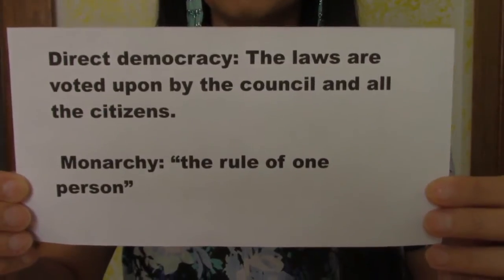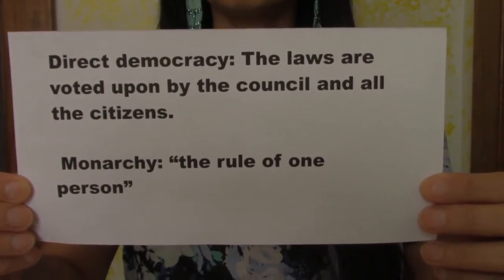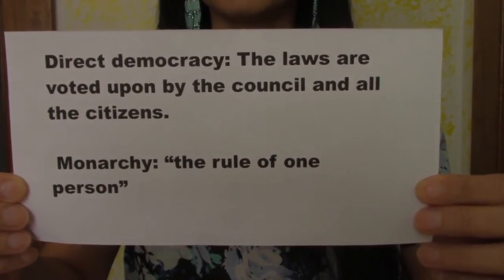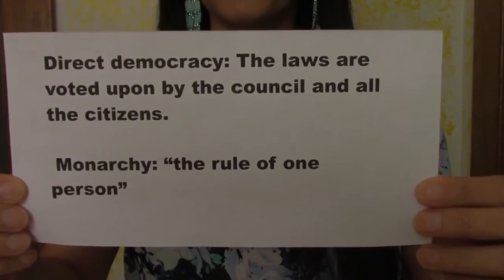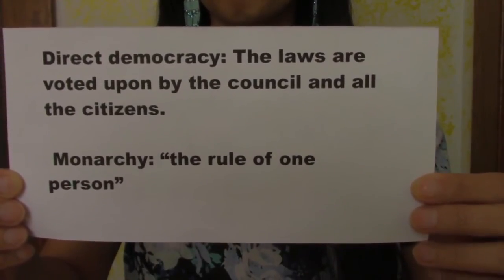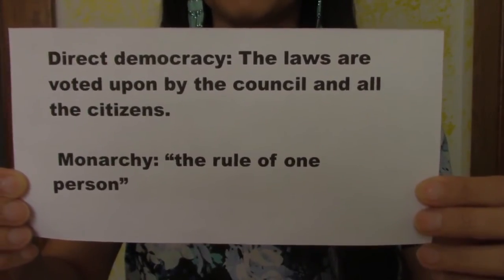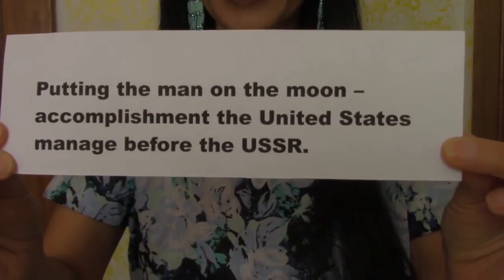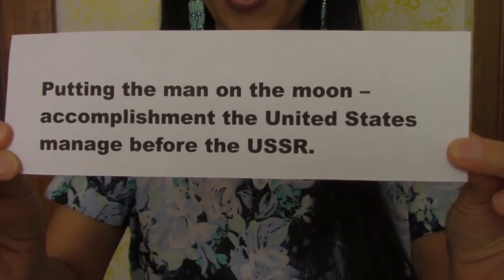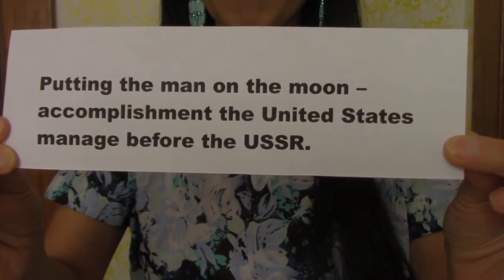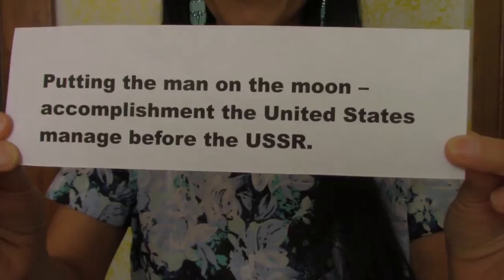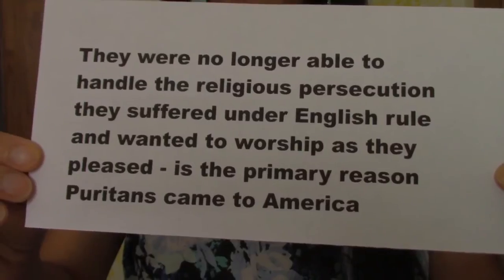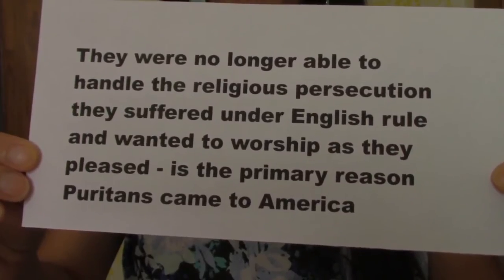Direct democracy: the laws are voted upon by the council and all citizens. Monarchy: the rule of one person. Moon accomplishment: the United States managed to reach the moon before the USSR, who were no longer able to handle the competition.